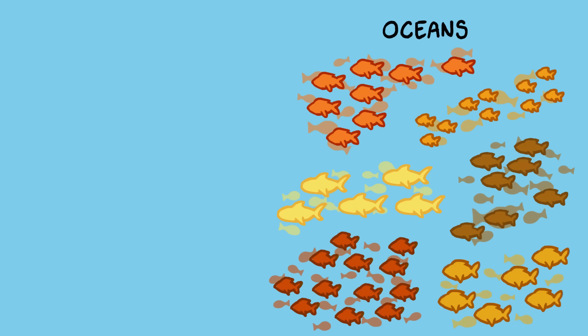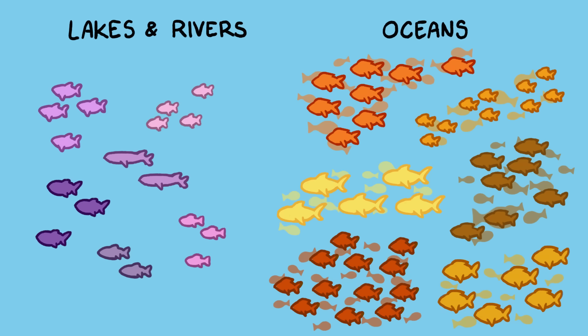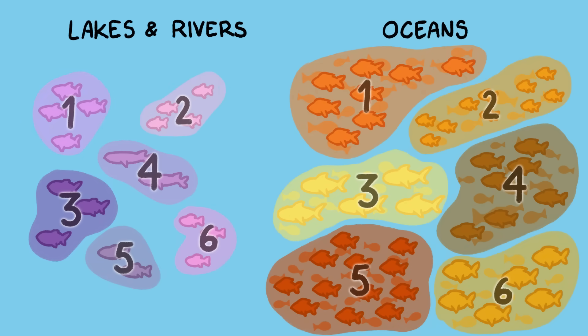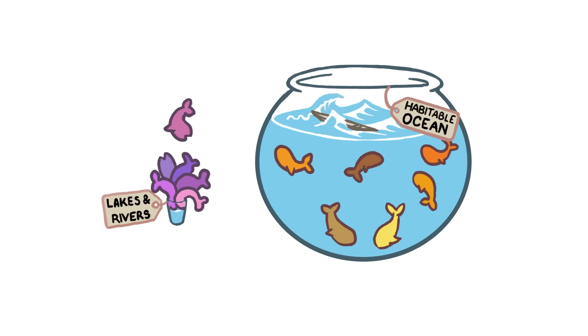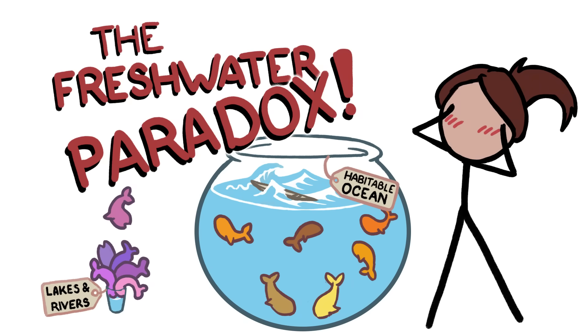In fact, there are far more individual fish in the ocean than in lakes and rivers, but not more species. So why does freshwater have comparatively so many species of fish? Scientists have dubbed this the freshwater paradox.